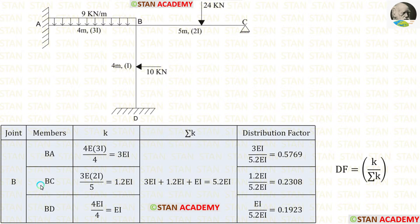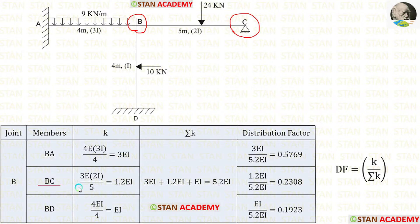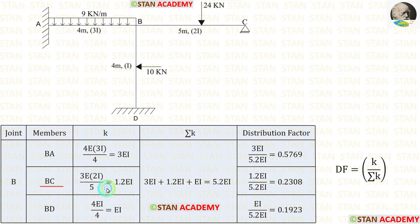Now let us find the stiffness for BC. From joint B, looking at point C, there is a hinged support. If the far end is hinged, the formula for stiffness is 3EI/L. The moment of inertia for BC is 2I and the length of BC is 5. Finally, for the stiffness of BC we are getting 1.2EI.